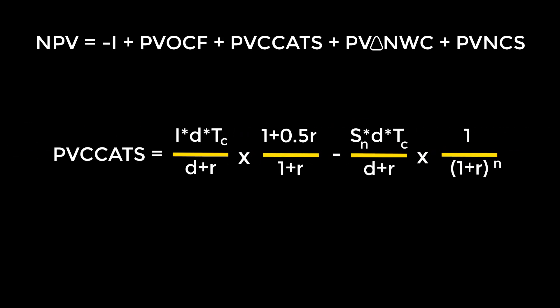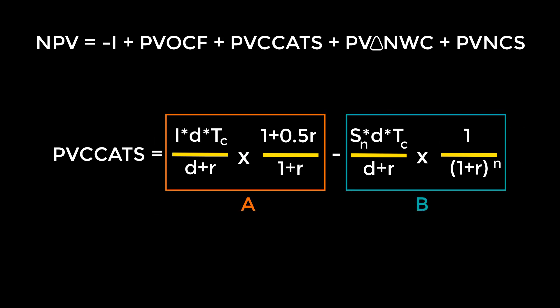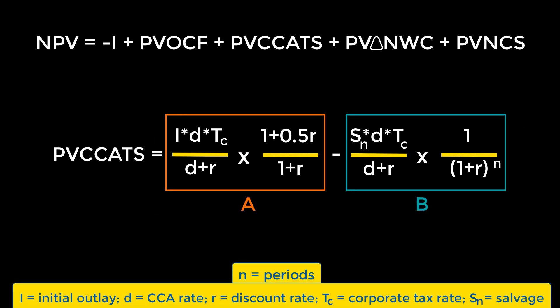Next we'll talk about PVCCATS. The formula is extremely long, so we can break it down into more manageable parts, which we'll arbitrarily call A and B. In part A, we've got I for the initial outlay, D for the depreciation rate, often called the CCA rate, and R for the discount rate. In part B, SN represents the salvage value and N represents the periods, usually given in years. From the way the equation is structured, if the problem has a salvage value of 0, all of part B becomes 0, and we need only calculate part A.